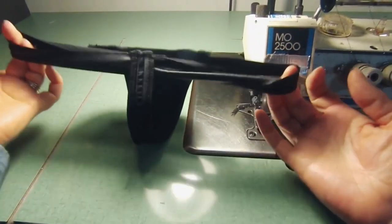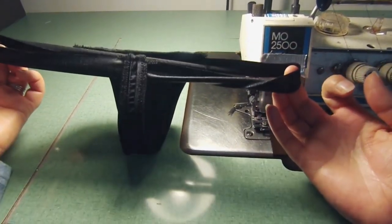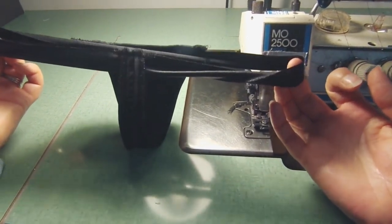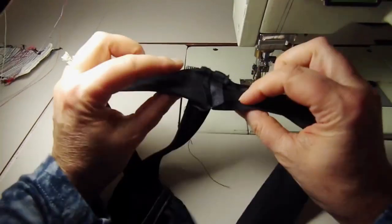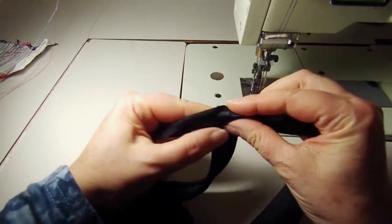So I've attached the waistband to the thong and we're going to finish up on the zigzag or the cover stitch machine. And I usually start in the very back and I fold it over.